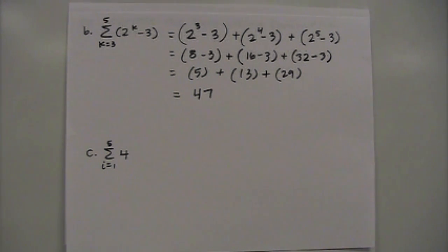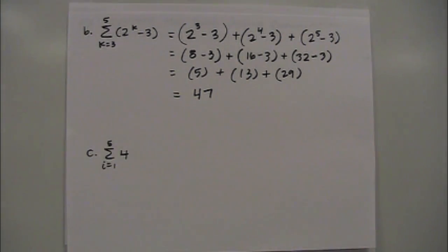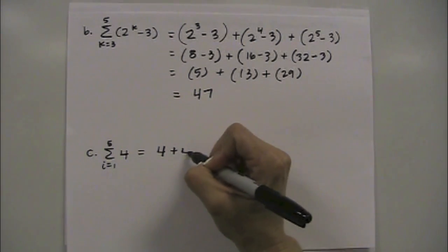Alright, for part c, it says i equals 1, and then you're stopping at 5, and your formula is just 4. And here, in this summation, your variable is i. In the last summation, with respect to the sigma, your variable was k. And again, for part c, if you guys notice there's no variable, you don't have i in this expression, it's just a constant.